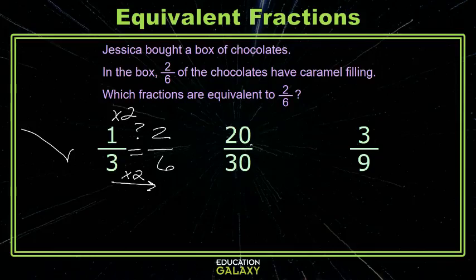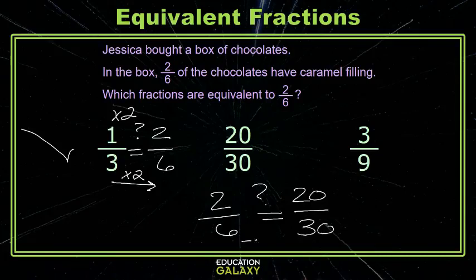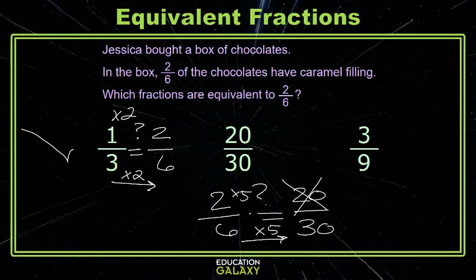How about twenty-thirtieths? Let's write that down here so you can see a little better. Is two-sixths equal to twenty-thirtieths? Well how do I get from six to thirty? I multiply by five. If I multiply two by five I get ten not twenty. That middle one is not correct.